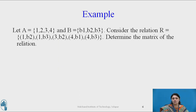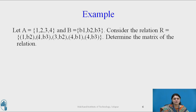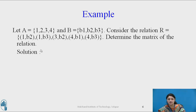For example, let A equal to 1, 2, 3, 4 and B equal to B1, B2, B3. Consider the relation R containing pairs: (1, B2), (1, B3), (3, B2), (4, B1), (4, B3). This is a relation between set A and set B. Now the question is: determine the matrix of the relation.